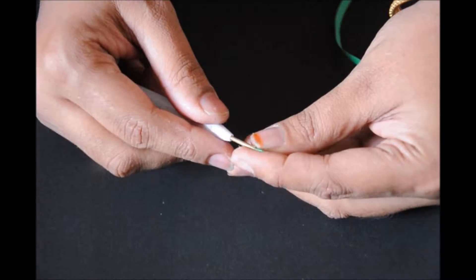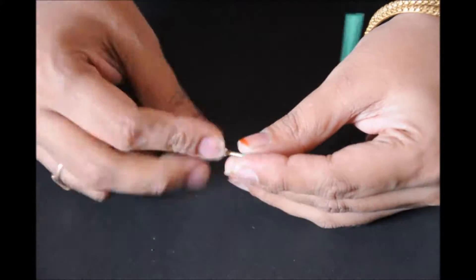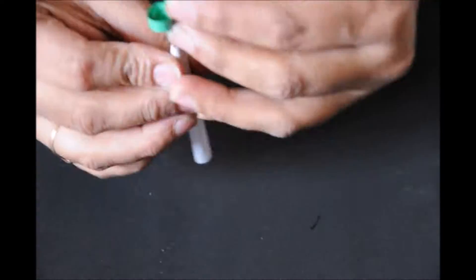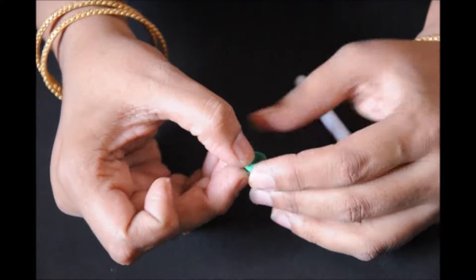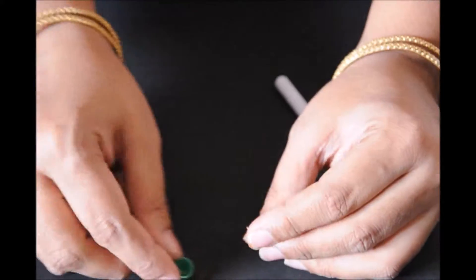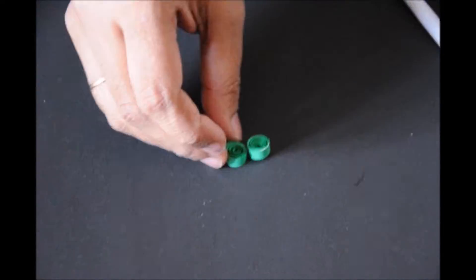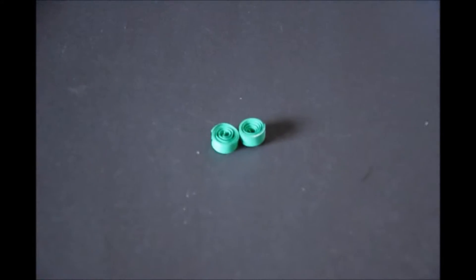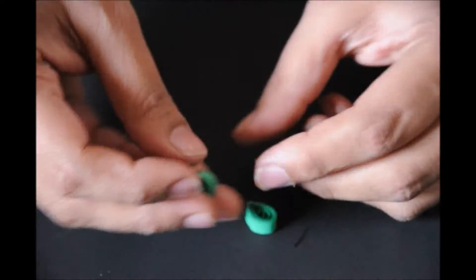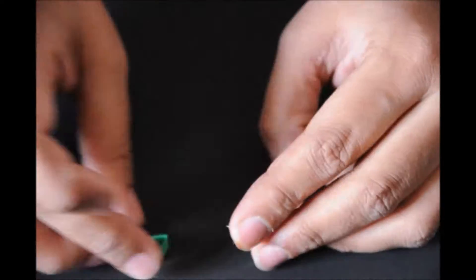Now take a half quilling strip, insert the quiller, and start rolling it till the end in a circular way. Loosen it and then glue it at the end. Gently fold on one side and make it into a drop shape. After making two of them, these are going to be the legs, so I just pressed it on one side and made them into a drop shape.